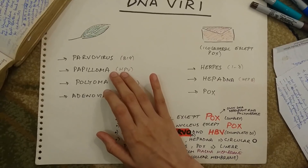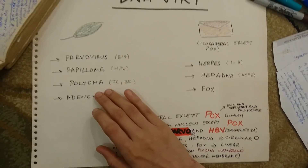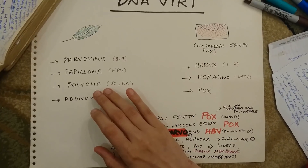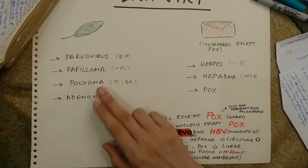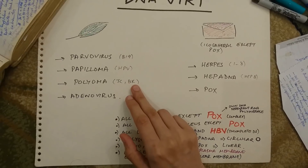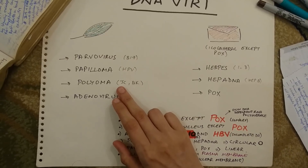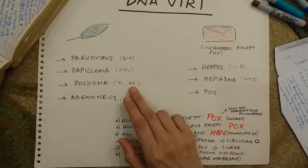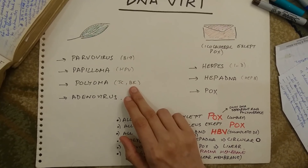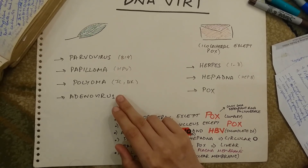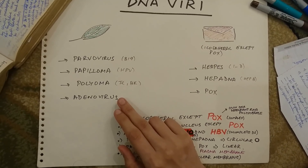The serotypes responsible for cancer are 16 and 18. After that we have the polyoma virus — do not confuse it with the virus that causes poliomyelitis, which is an RNA virus; this is a DNA virus. Polyoma virus consists of the JC and BK virus. JC virus is responsible for progressive multifocal leukoencephalopathy in patients with HIV, and BK virus is responsible for nephropathy and renal failure in patients who are immunocompromised after renal transplant. The adenovirus is responsible for acute hemorrhagic cystitis, febrile pharyngitis, pneumonia, and conjunctivitis.